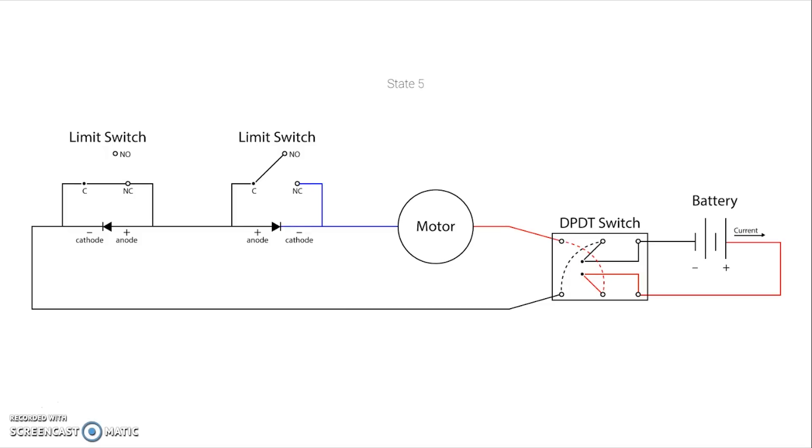And so similarly this will continue until you reach the end. It'll open the other limit switch, it'll stop the motor from running because it's open to this switch and this diode is preventing current in the direction that would allow it to rotate.